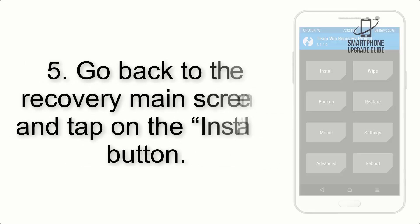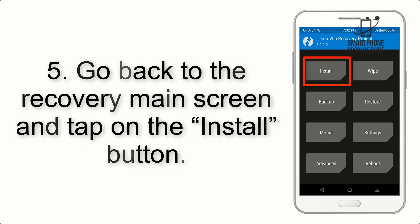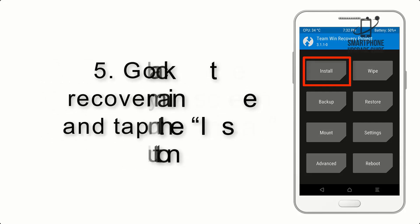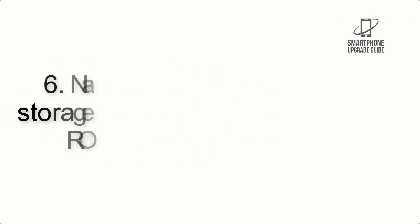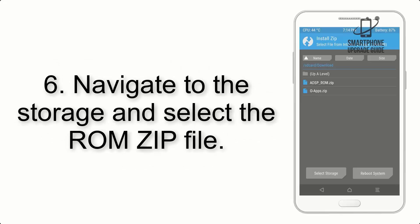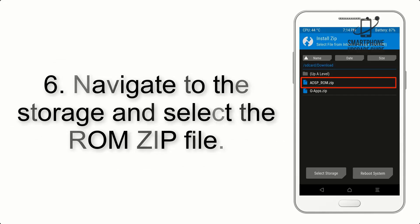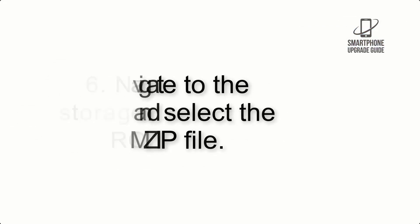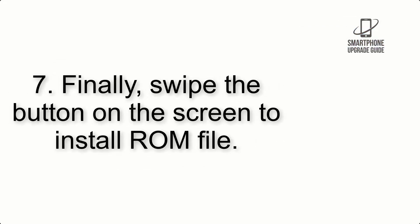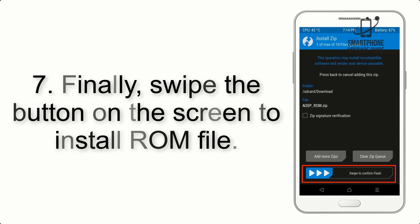Step 4: Swipe the button to wipe the device. Step 5: Go back to the recovery main screen and tap on the Install button. Step 6: Navigate to the storage and select the ROM zip file.